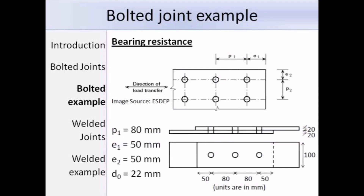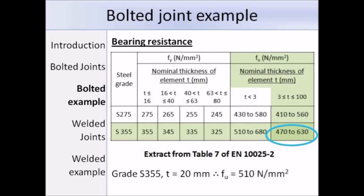Now we are going to work out the bearing resistance. For that we need the spacing and end and edge distances: spacing P1 in the direction of load transfer is 80mm, end distance E1 is 50mm, edge distance E2 is 50mm, and the diameter of the bolt holes D0 is 22mm. We also need the ultimate tensile strength of the plate. We are using grade S355 steel with a thickness of 20mm, so Fu is 510 N/mm².